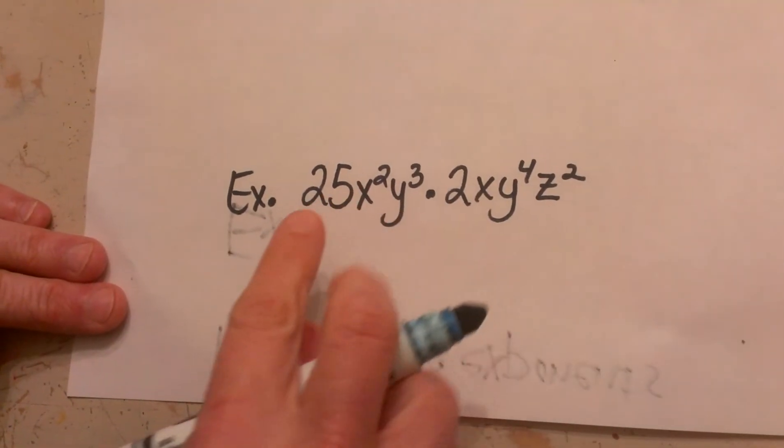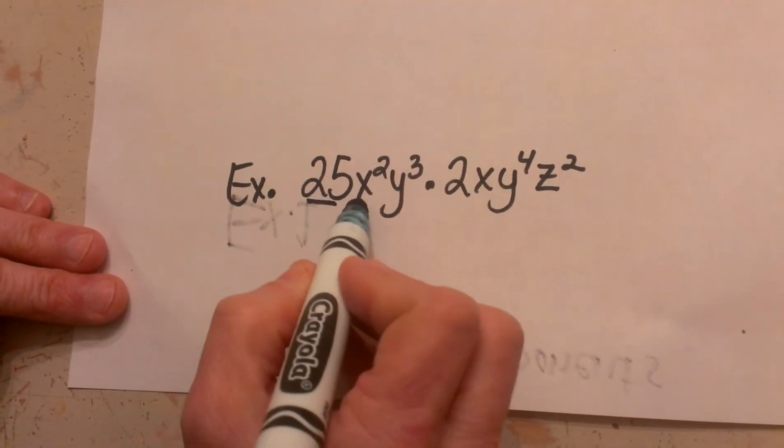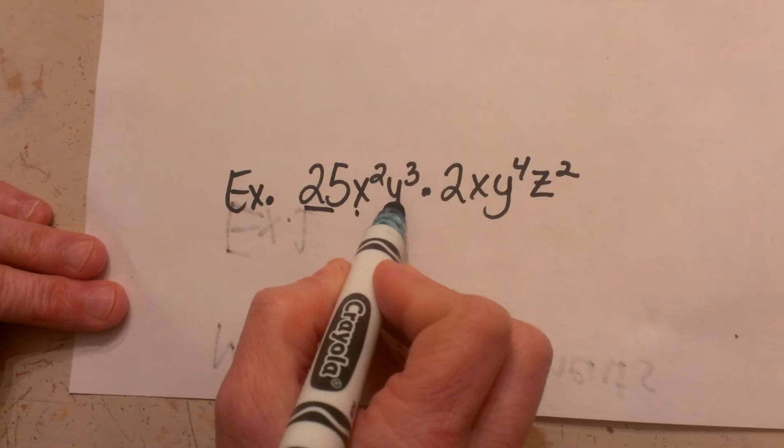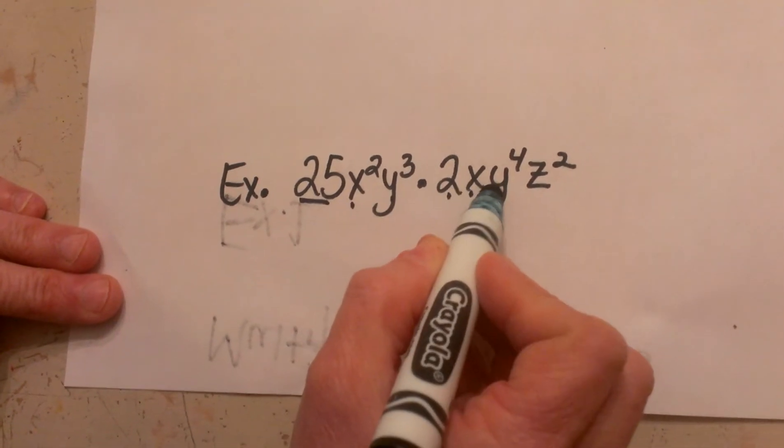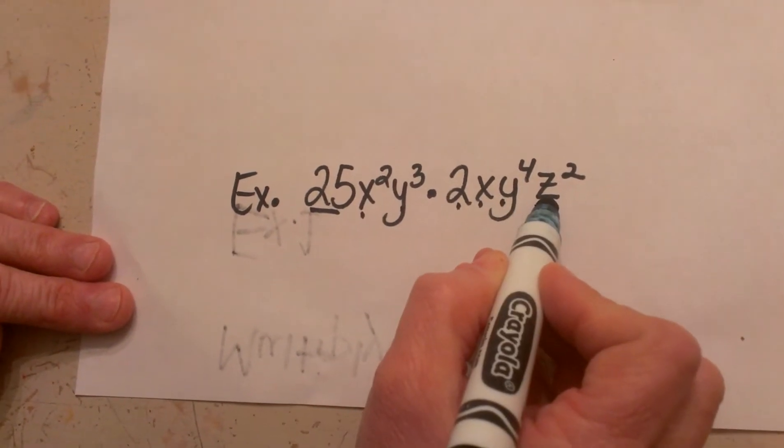Let us look at a second example. So I have 25x squared y cubed times 2xy to the fourth z squared.